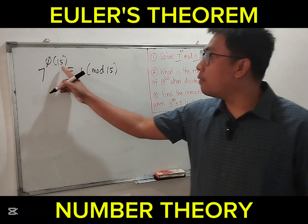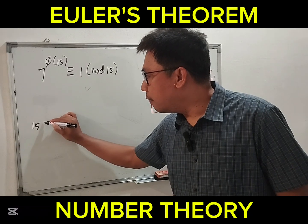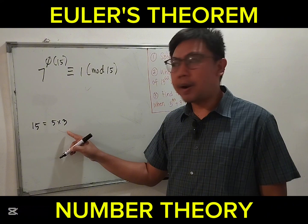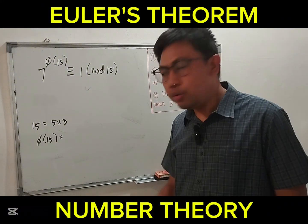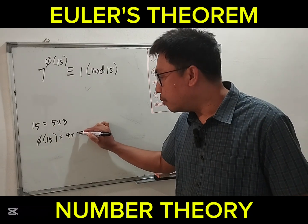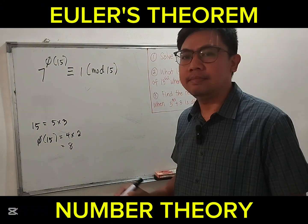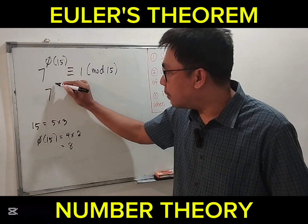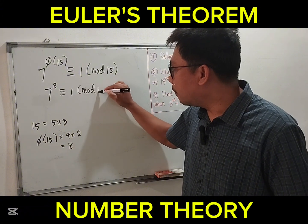Let's solve phi of 15. We factor 15 first: 15 is equal to 5 times 3, and 5 and 3 are prime. So phi of 15 equals (5 minus 1) times (3 minus 1), which is 4 times 2, equal to 8. So our congruence is 7 to the 8 is congruent to 1 modulo 15.